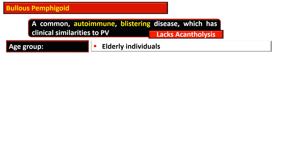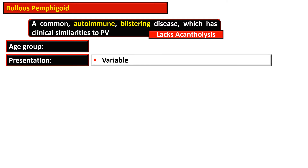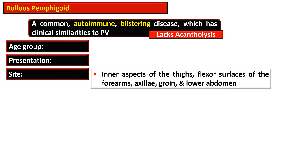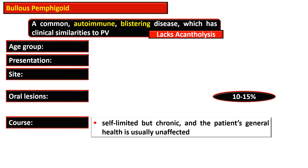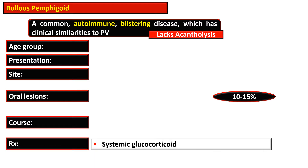This disease is almost equally common in both male and female and it affects elderly individuals. The presentation is variable. Sites affected include the inner aspect of the thigh, flexor surface of the forearm, axilla, groin, and lower abdomen. Oral lesions appear after cutaneous lesions and are present in 10 to 15 percent of cases, possibly presenting as a urticarial plaque with severe pruritus. The course is self-limited but chronic, and the patient's general health is usually unaffected. Treatment is by systemic glucocorticoids.